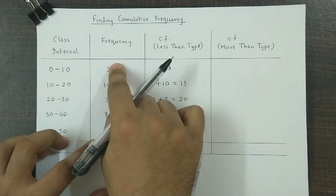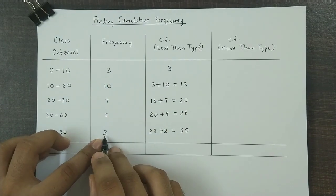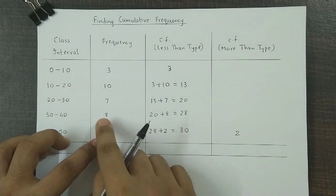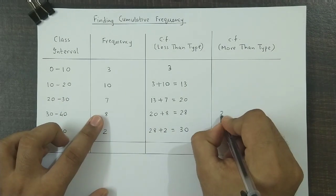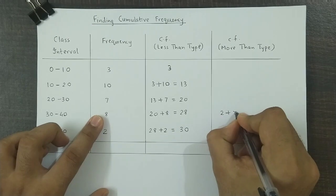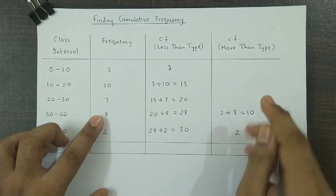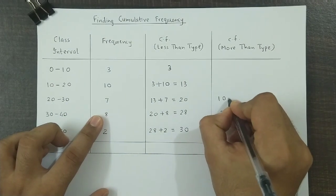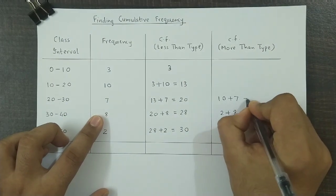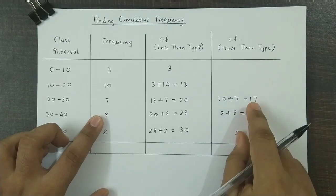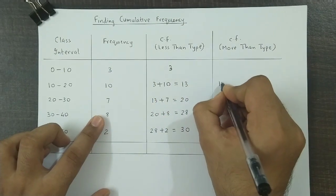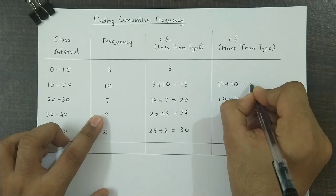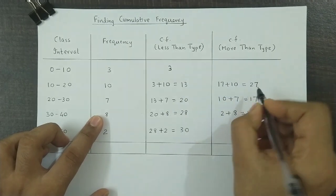So starting with the last frequency, 2 would remain as it is. We will add 2 with 8, so we have 2 plus 8 which results in 10. And 10 plus 7, so we have 10 plus 7 which is equal to 17.